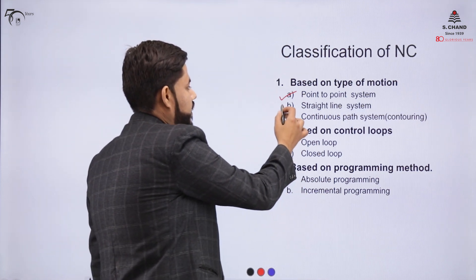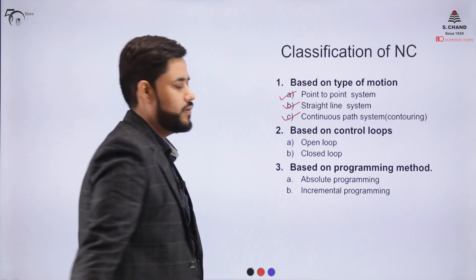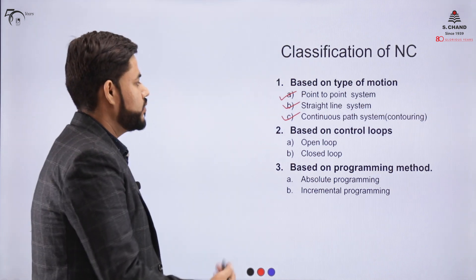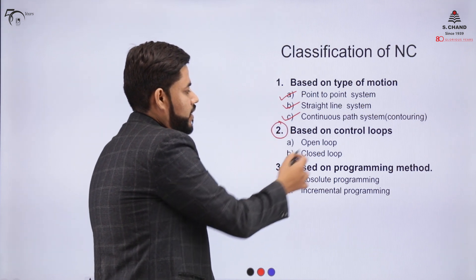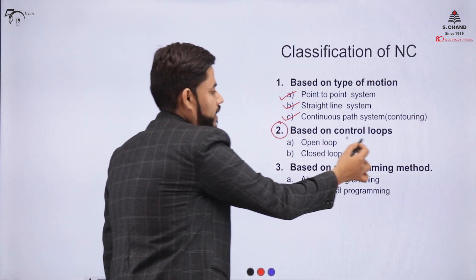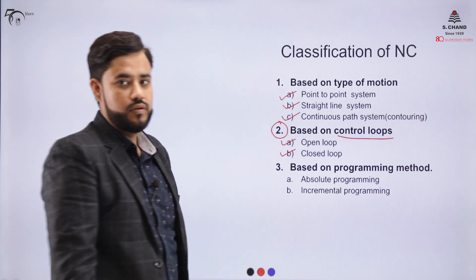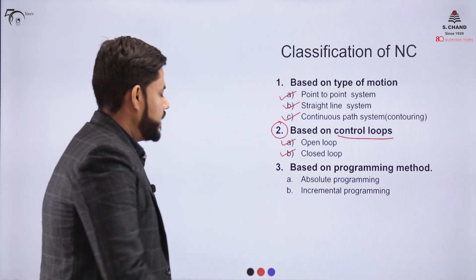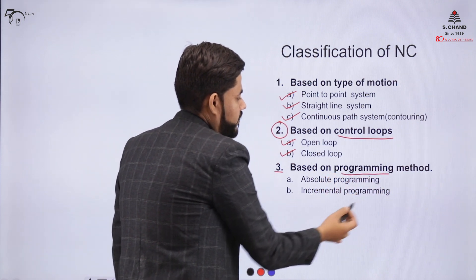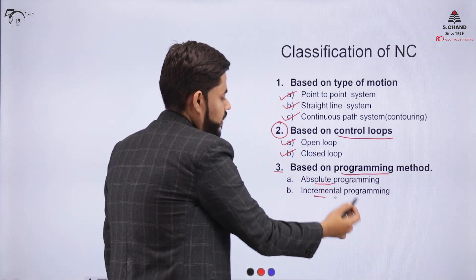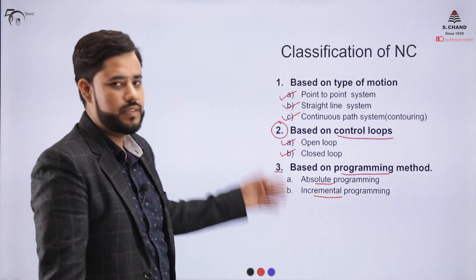The second category is the straight line system, and the third is the continuous path system, also called the contouring process. The second classification is based on the type of control loops: open loop and closed loop. The third classification is based on the type of programming methods: absolute programming and incremental programming.